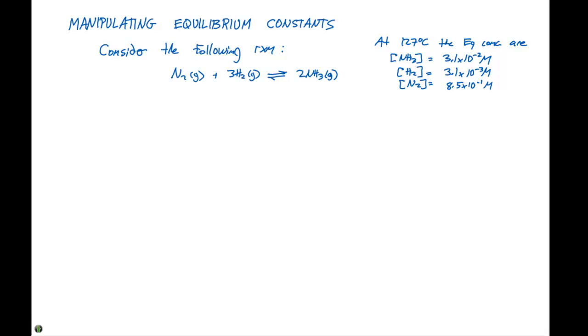We have nitrogen gas plus three hydrogen gas in equilibrium with two NH3 gas. And at 127 degrees Celsius equilibrium concentrations are 3.1 times 10 to the minus two for NH3, 3.1 times 10 to the minus three for hydrogen, and 8.5 times 10 to the minus one for the nitrogen.